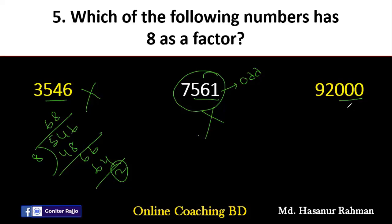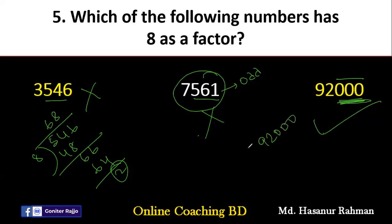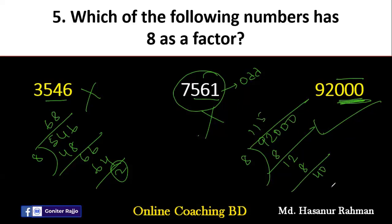Now the last one: 92000. If you see the last 3 digits are 000, then obviously this number will be divisible by 8. If the last 2 digits are 0, it is divisible by 4. If the last 3 digits are all 0, it is divisible by 8. So 92000 is obviously divisible by 8. Let me verify: dividing 92000 by 8 gives no remainder. So 8 is a factor of 92000.